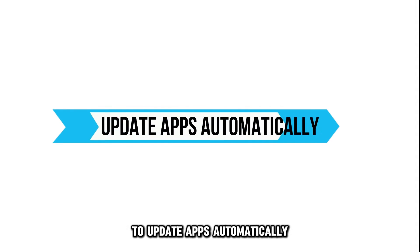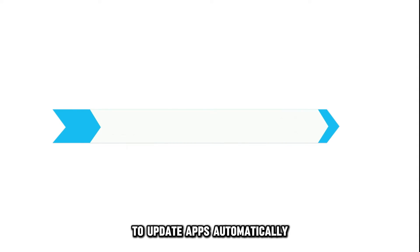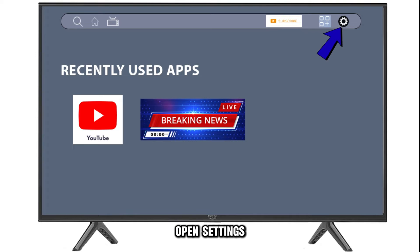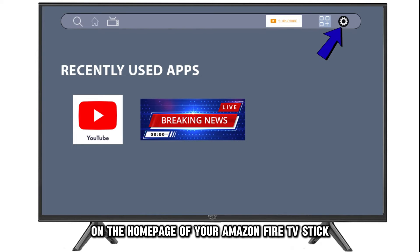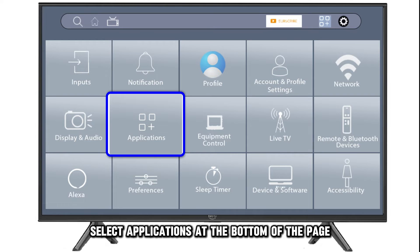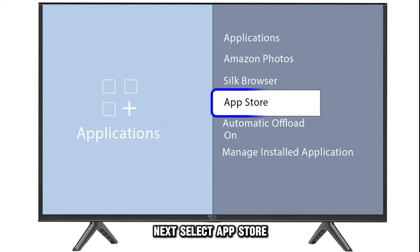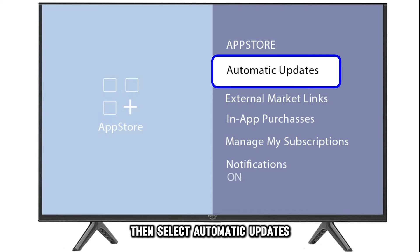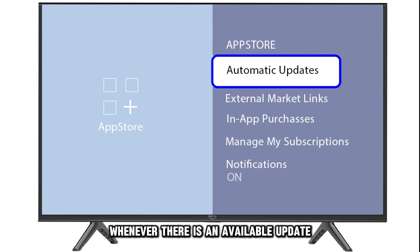To update apps automatically, open Settings on the homepage of your Amazon Fire TV Stick. Select Applications at the bottom of the page. Next, select App Store. Then, select Automatic Updates. Your apps will now automatically update whenever there's an available update.